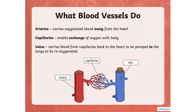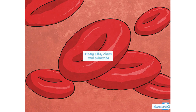What blood vessels do: arteries carry oxygenated blood away from the heart. Capillaries enable the exchange of oxygen with the body. Veins carry blood from the capillaries back to the heart, to be pumped to the lungs to be re-oxygenated. That is how your blood gets purified — re-oxygenated means it is being purified. Thank you for staying tuned — do like, share, and subscribe. Take care!